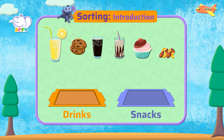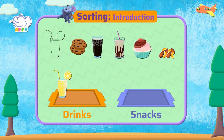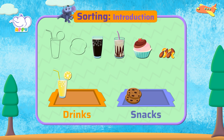A glass of juice. Juice is a drink. Let's put it on the drinks tray. Chocolate chip cookies. Chocolate chip cookies are a snack. We place them on the snacks tray.